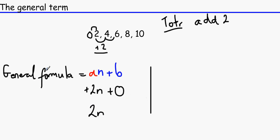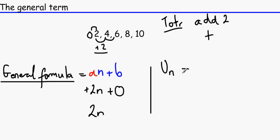Now, the thing at A-level is that we actually have a symbol for the general formula, and that is UN. UN is the symbol for the general formula. So UN equals 2N. From this, if you wanted to find out what the fifth term is, we can replace N with 5. Remember, we cannot just use random numbers for N — we can't write 6 here and 5 there. The N has to be the same.